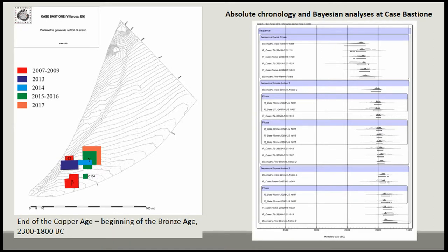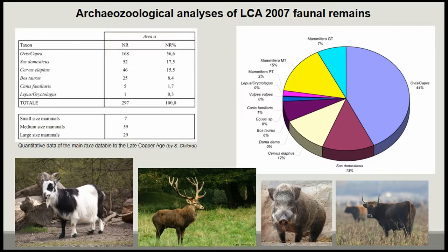Archaeozoological remains have already been published for the first phase of the village. For the end of the Copper Age village, most of the remains belong to ovicaprids — the percentage is between 55 and 66 percent, also for the second Early Bronze Age phase. We have a good amount of Sus, and it is not clear whether it is Sus domesticus, as at Castelluccio, or wild boar. Finally, we have a good amount of deer, which is quite unusual for this phase, at least compared to what we know from other archaeological sites in Sicily, which are mainly coastal sites.